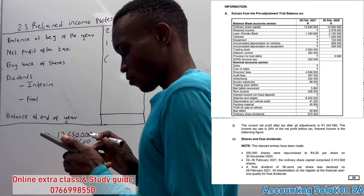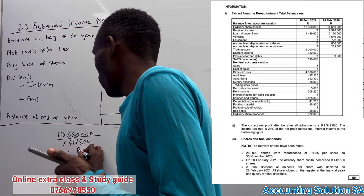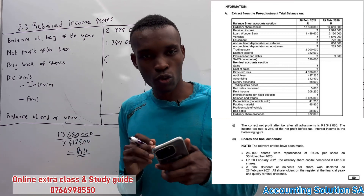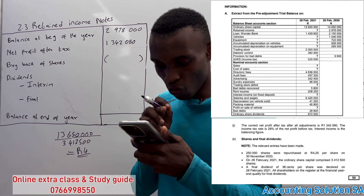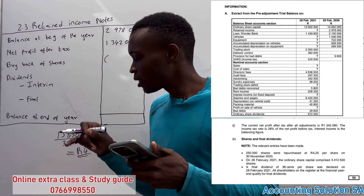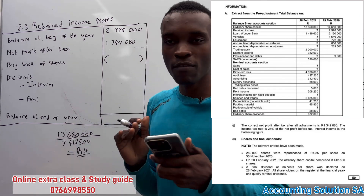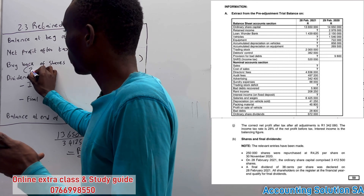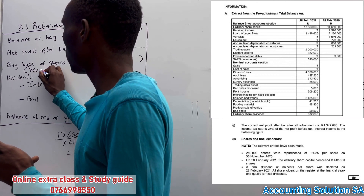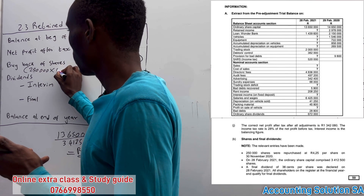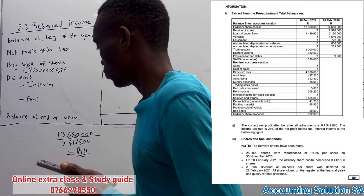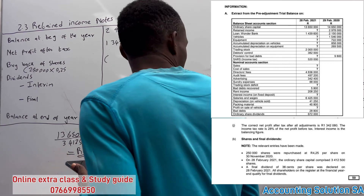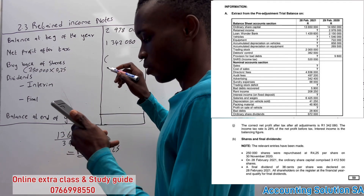That calculation gives you R4.00, meaning our average price was R4.00. Since we repurchased at R4.25 but the actual price is R4.00, our loss is 25 cents per share. So we take 250 shares multiplied by 25 cents loss — which we get from R4.25 minus R4.00 — giving us a loss of R62,500.